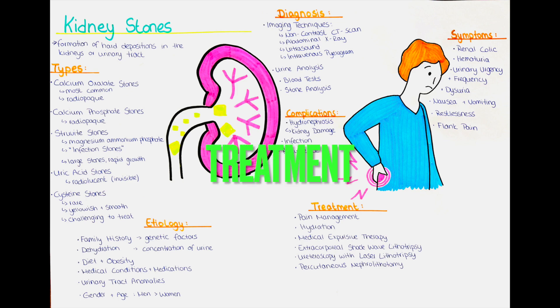How can we treat kidney stones? The treatment of renal stones depends on various factors, including the size, location, composition of the stones, symptoms experienced by the patient and the likelihood of spontaneous passage. Pain relief is often a primary concern in the treatment of renal stones. Non-steroidal anti-inflammatory drugs, or NSAIDs, are commonly used to manage pain associated with renal colic. In severe cases, stronger analgesics may be prescribed.